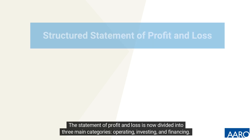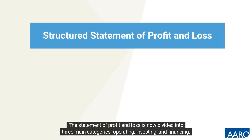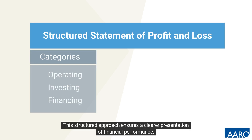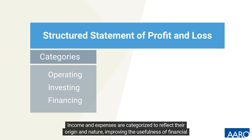The statement of profit and loss is now divided into three main categories: operating, investing, and financing. This structured approach ensures a clearer presentation of financial performance. Income and expenses are categorized to reflect their origin and nature, improving the usefulness of financial statements.